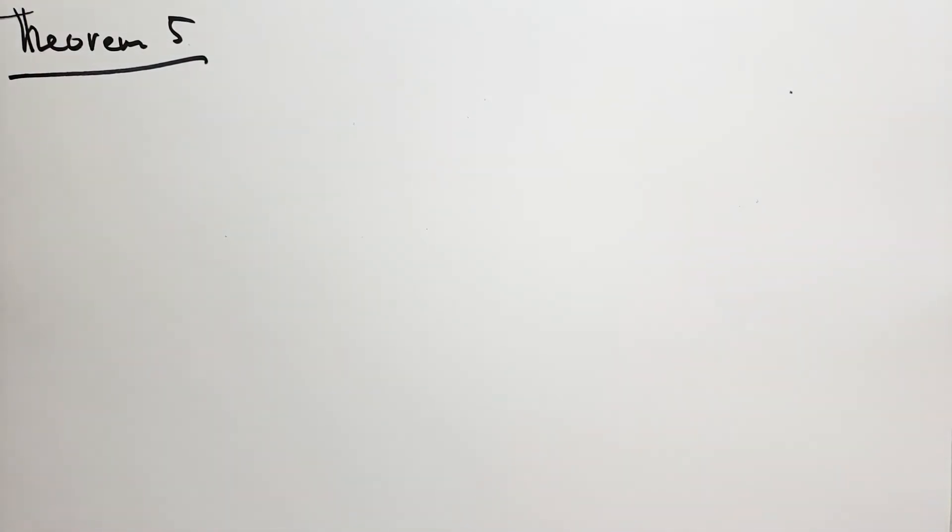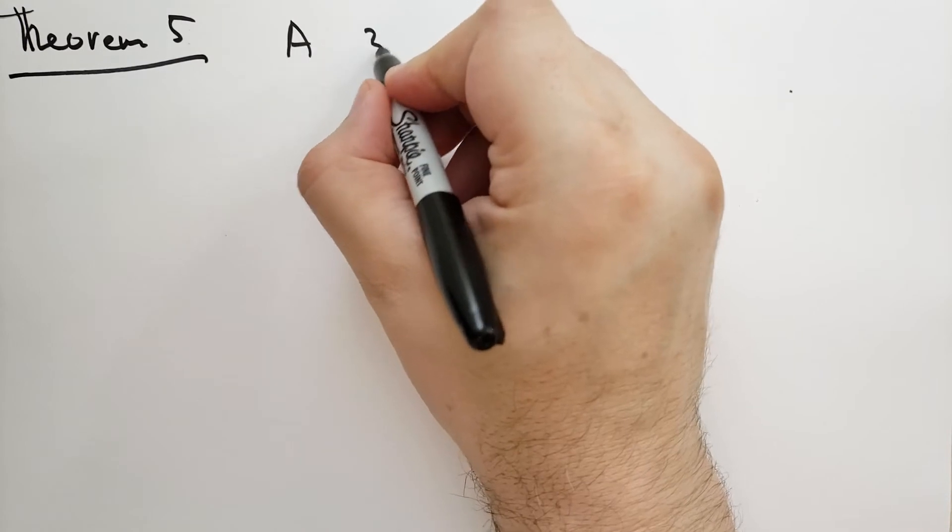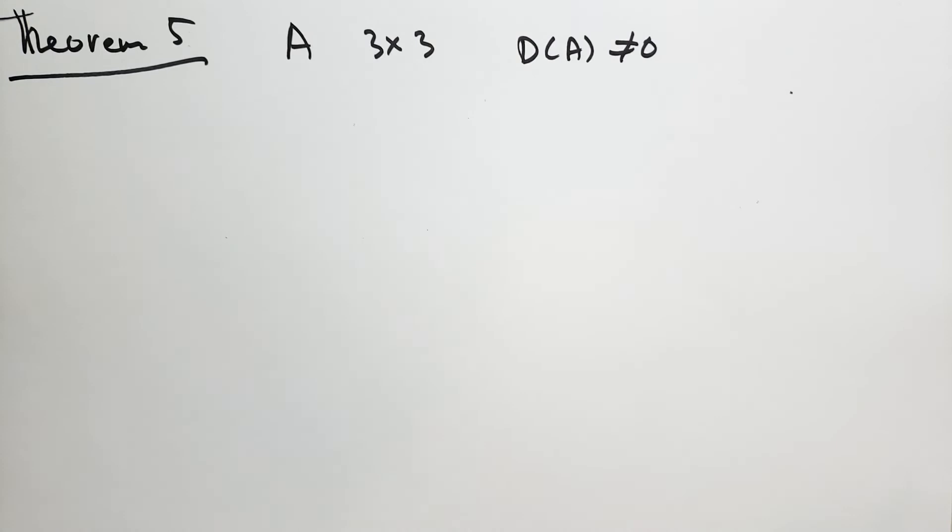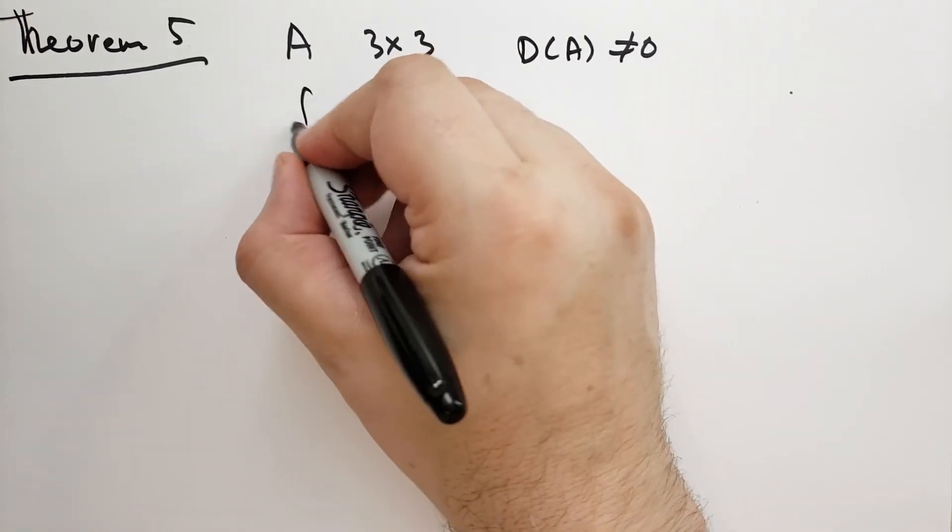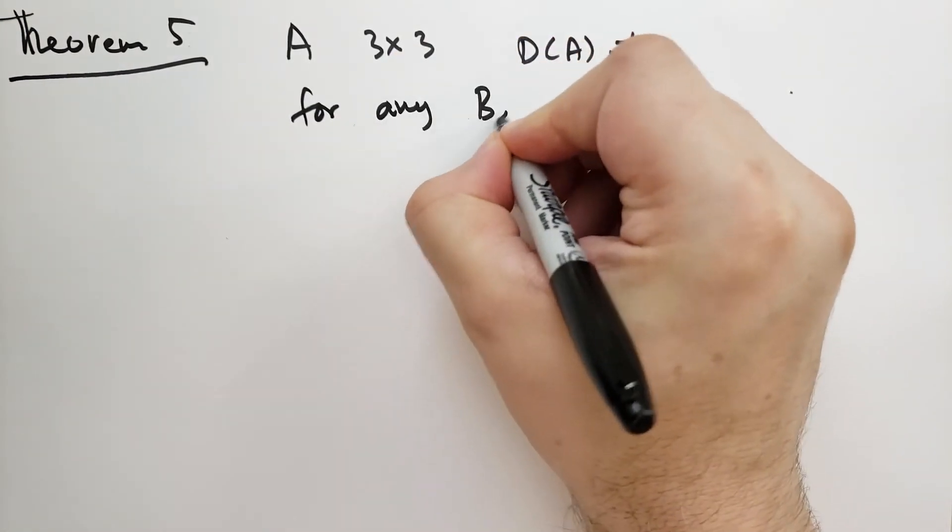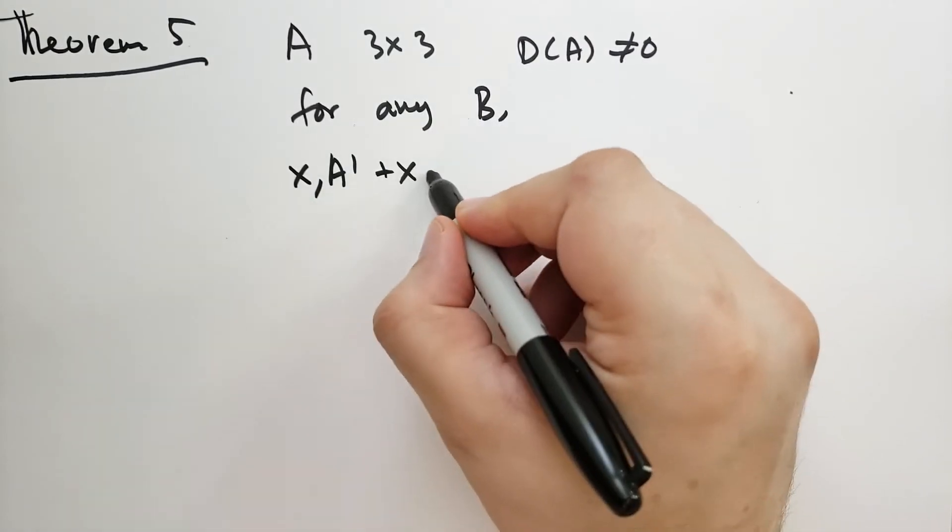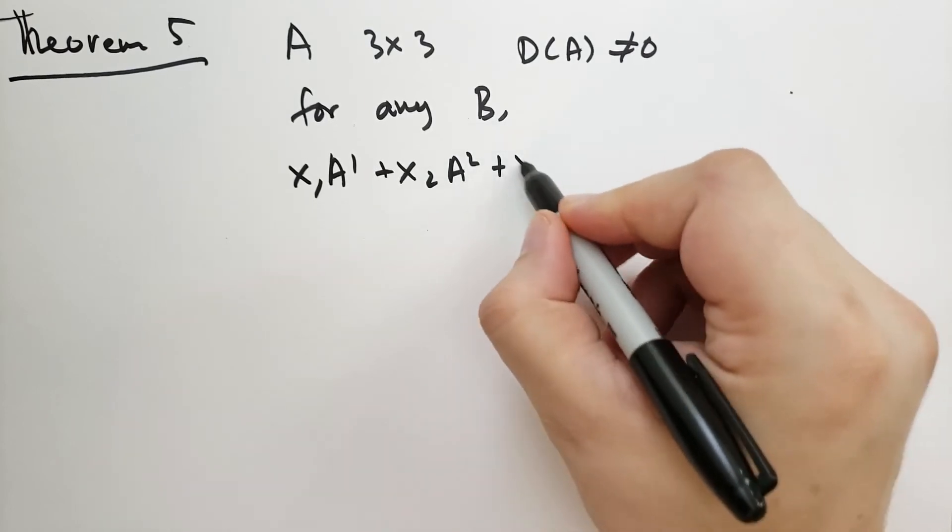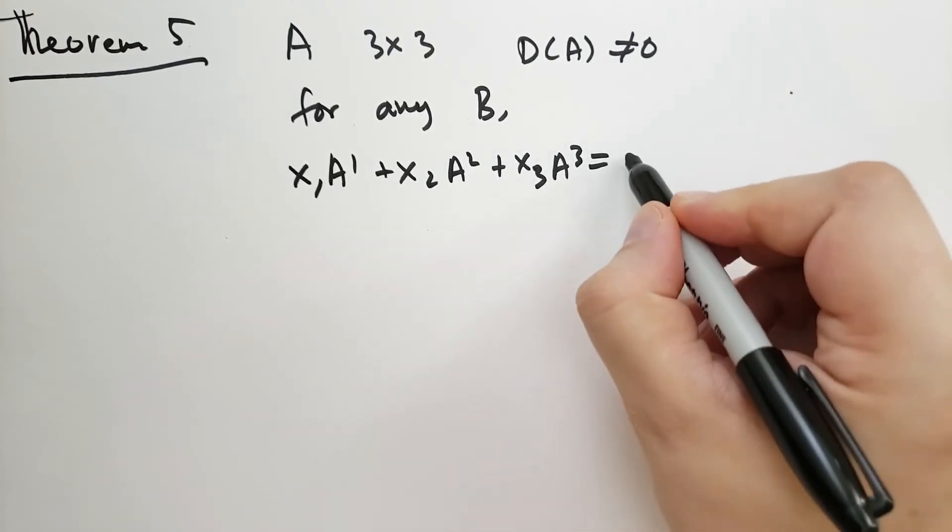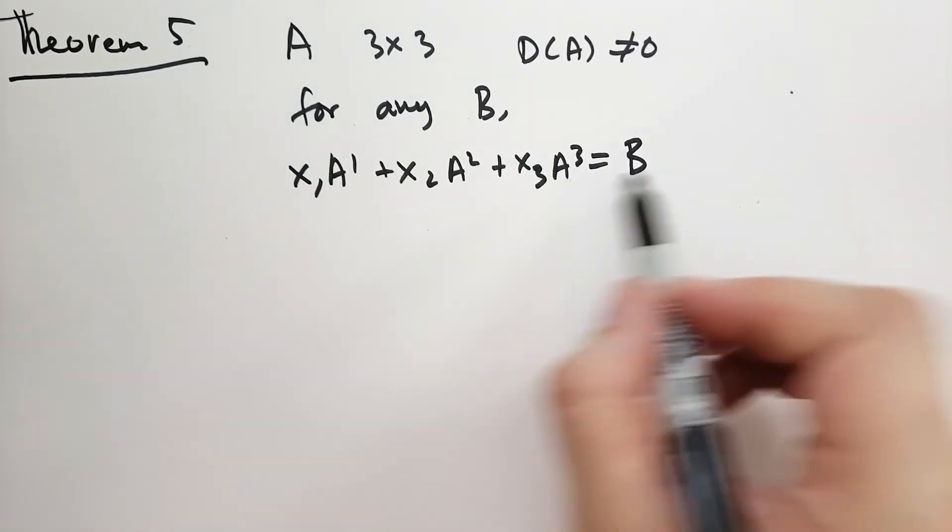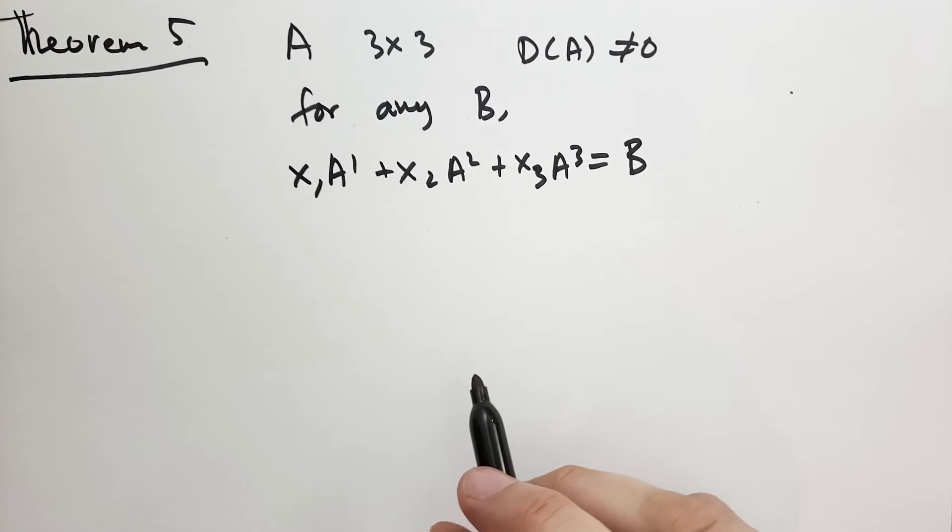Theorem 5: Let A be a 3 by 3 matrix whose determinant is not zero. Then for any column B, there exists numbers X1, X2, X3 such that X1*A1 plus X2*A2 plus X3*A3 equals B. In other words, this system of linear equations always has a solution.